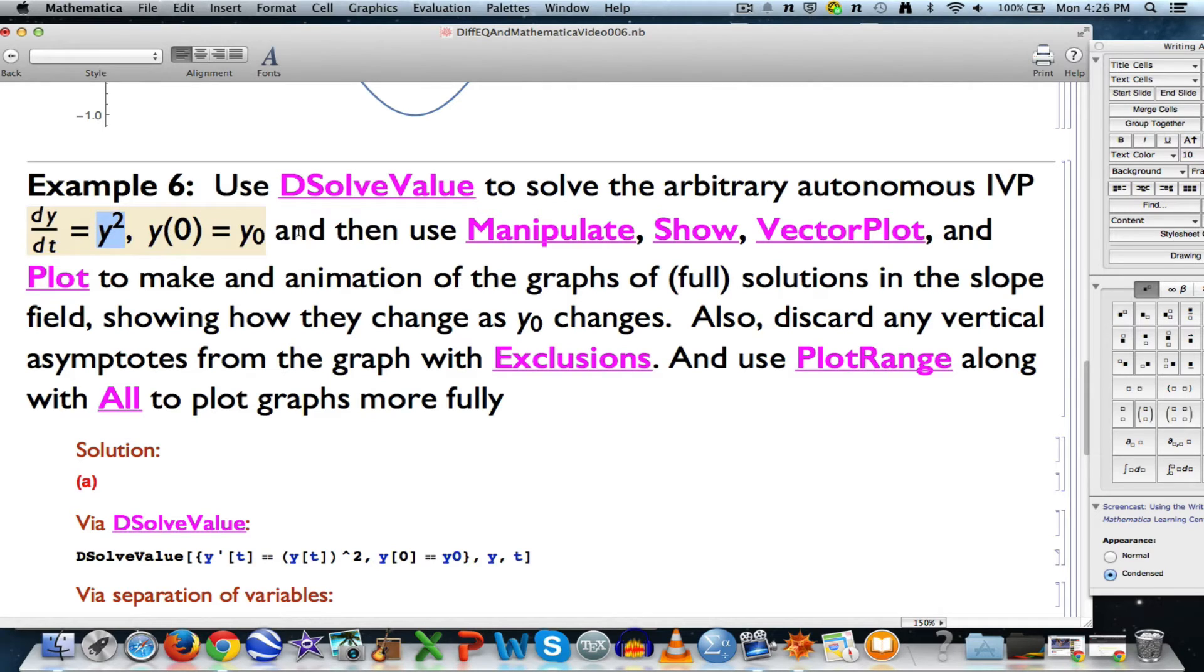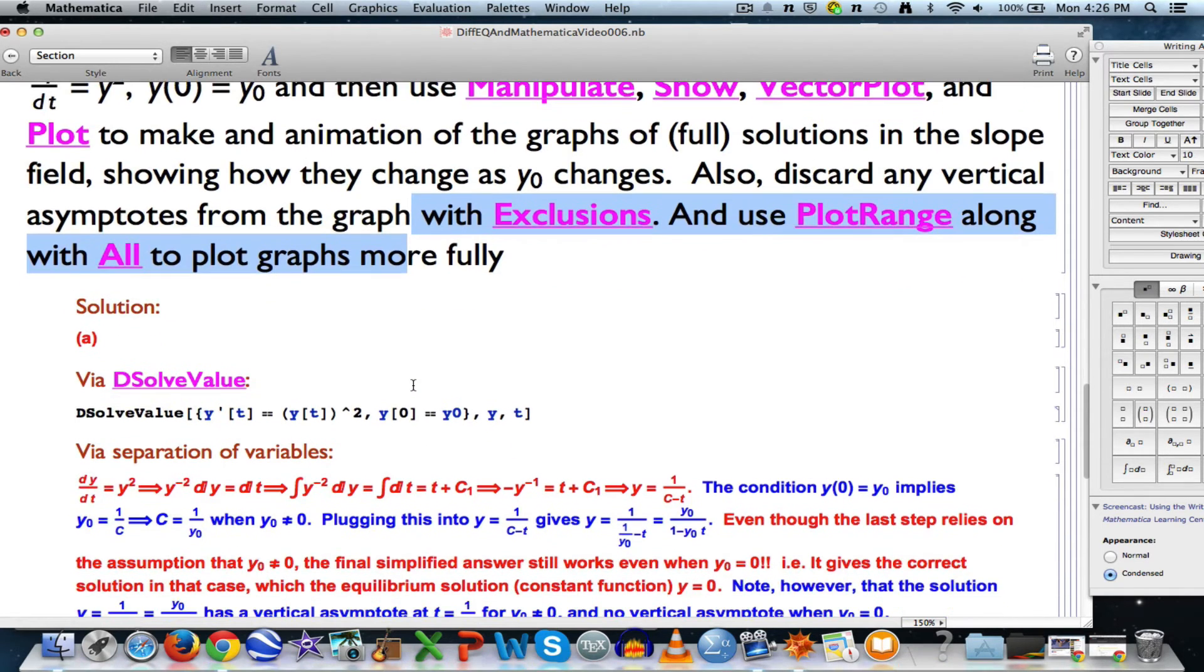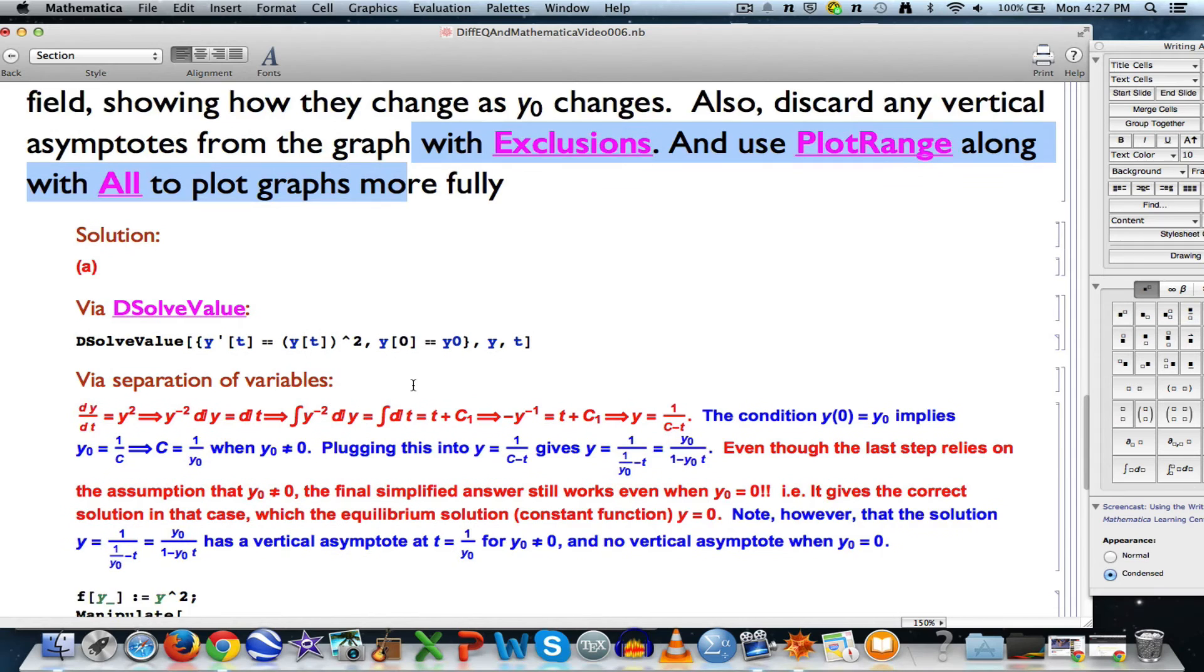dy/dt equals y squared. We're going to, again, make the slope field with Manipulate, Show, VectorPlot, and Plot. I'm going to show you how to discard vertical asymptotes with Exclusions, and then we're going to have to use PlotRange and All, because the graph doesn't show up fully.